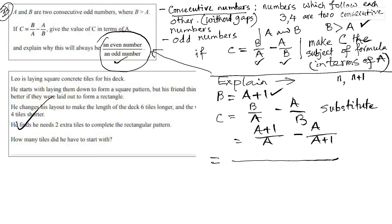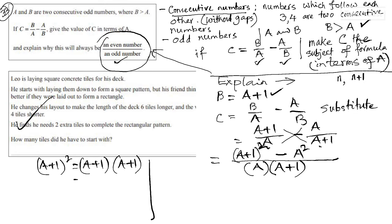So I go for highest common factor, which is multiplying these two, multiplying these two. And then cross multiplying gives you A plus one squared minus A squared. Now, you've got to do lots of expanding. So, A plus one squared means A plus one times A plus one.